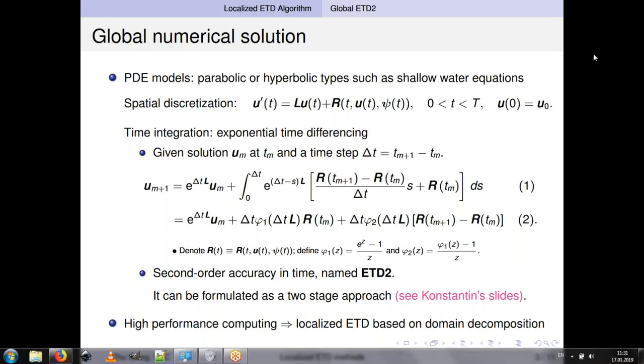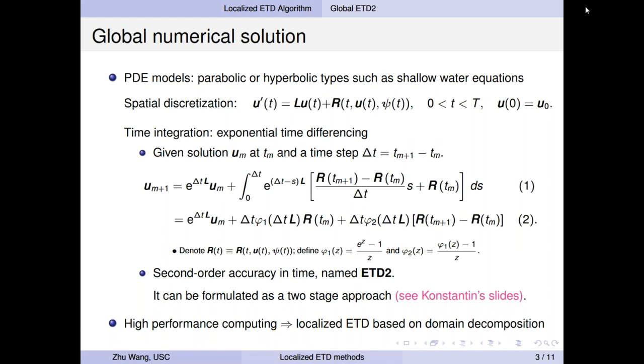Then we use exponential time differencing method for time integration. So given solution at the current time step, we want to approximate the solution at the next time step, u_m+1. So the exponential time differencing method will integrate the linear part exactly while approximating the nonlinear part. For example, using equation 2, which is second order accurate in time. So we call it ETD2. And it can be formulated as a two-stage approach, just as Constantine suggested.